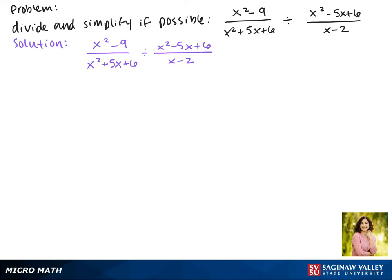Our first step when dividing these is to multiply by the reciprocal. So our first term is going to stay the same. We change the division to multiplication and then the reciprocal we switch the numerator and denominator.